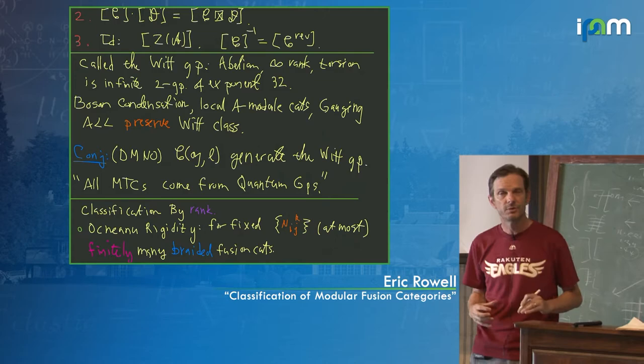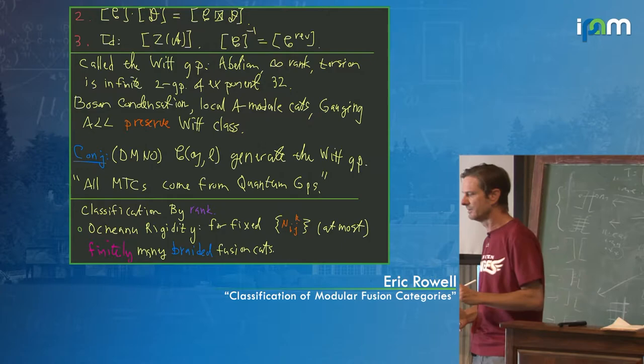To understand the torsion part of this group: there's a big infinite part as well. For example, Fibonacci has infinite order in the Witt group.